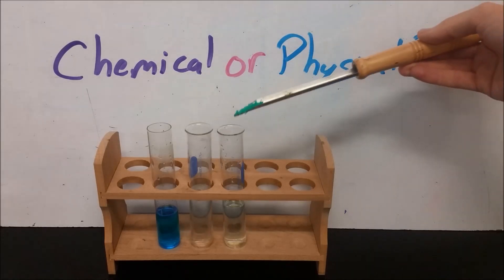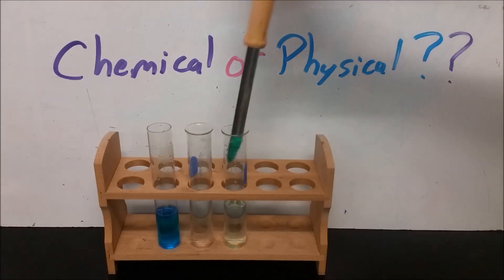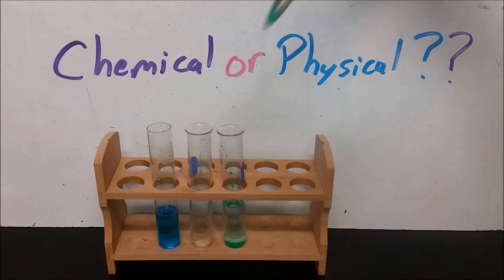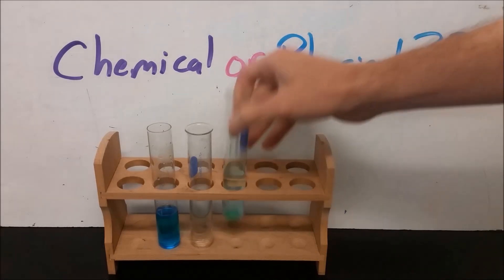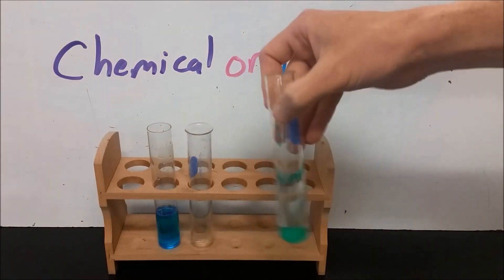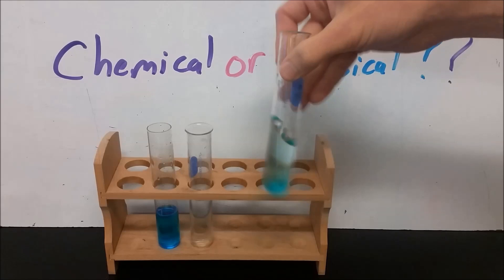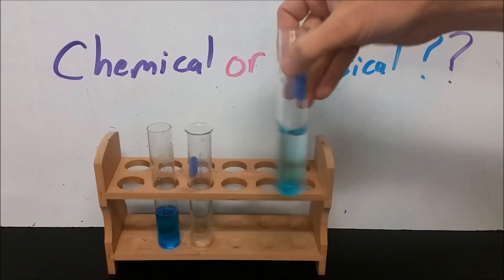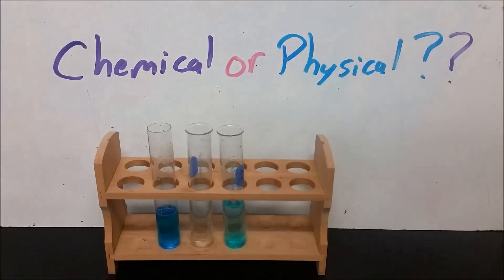Some would consider this a physical change because it's dissolving. Some would consider this to be a chemical change because it's a Lewis acid-base reaction. Some would consider this a chemical change because there's a color change. Some would consider this a chemical change because a new substance forms. Some would consider it a physical change because it's reversible.